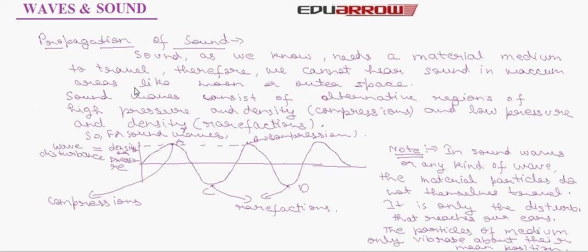Now let us discuss about propagation of sound. Sound as we know, needs a material medium to travel. Therefore, we cannot hear sound in vacuum, areas like moon or outer space. Sound waves consist of alternative regions of high pressure and density, that is the compressions, and the low pressure and density, which are the rarefactions. So for sound waves, wave disturbance is equivalent to density or pressure variations. So the points A and B are the regions of compressions and the points C and D represent rarefactions. In sound waves or any kind of wave, an important thing to note is the material particles do not themselves travel. It is only the disturbance that reaches our ears. The particles of medium only vibrate about their mean position and transfer the disturbance and energy.